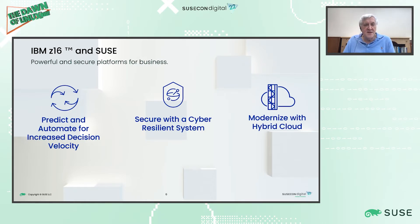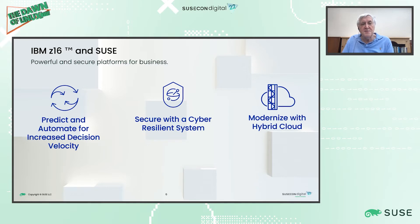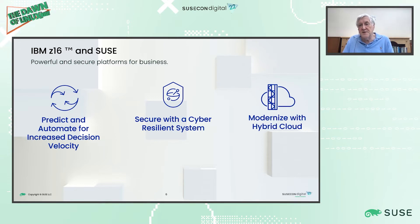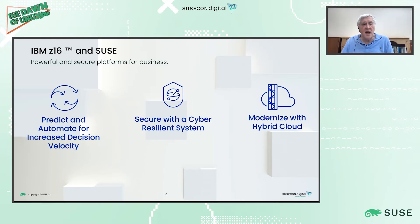Our aim with the new IBM Z16 and the ecosystem of software and tools surrounding it from SUSE and others is to provide technology and tools to help accelerate your digital transformation. IBM Z16 is built to accelerate decision velocity with its new Telum processor, which includes the industry's first on-chip AI accelerator. It also delivers unmatched security and cyber resiliency with quantum-safe cryptography, and is built for the hybrid cloud with open, industry-standard tools including an agile DevOps methodology to accelerate application modernization.